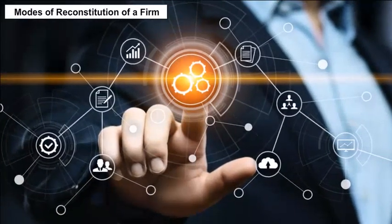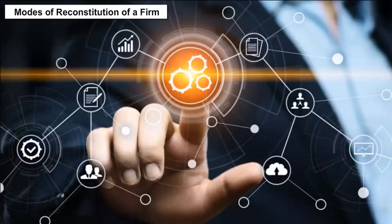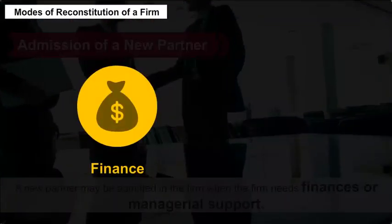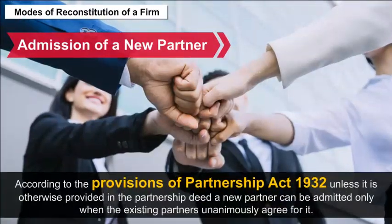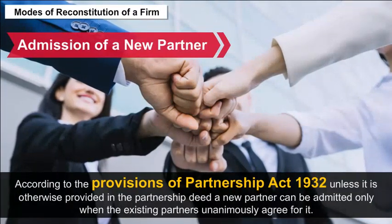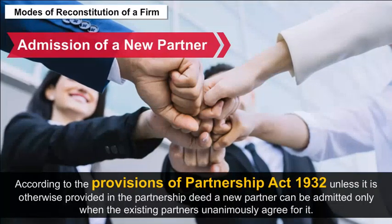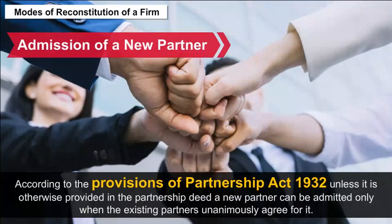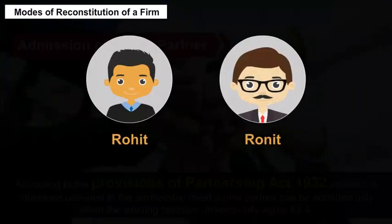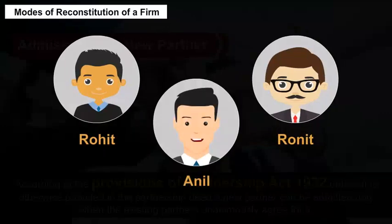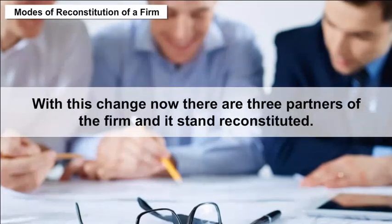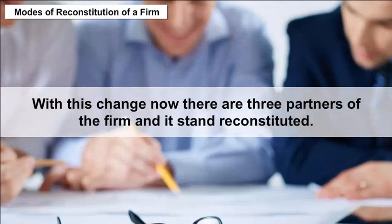Modes of reconstitution of a firm: The reconstitution of the firm happens in many ways. Admission of a new partner: A new partner may be admitted when the firm needs finances or managerial support. According to the Partnership Act 1932, unless otherwise provided in the partnership deed, a new partner can be admitted only when the existing partners unanimously agree. For example, Rohit and Ronit are partners sharing profits in the ratio of 3:2. On April 1, 2007, they admitted Anil as a new partner with 1/6 share in profits. With this change, there are now 3 partners and the firm stands reconstituted.